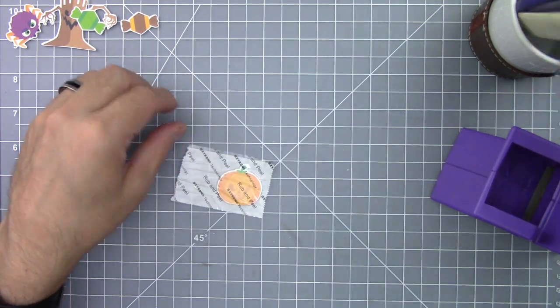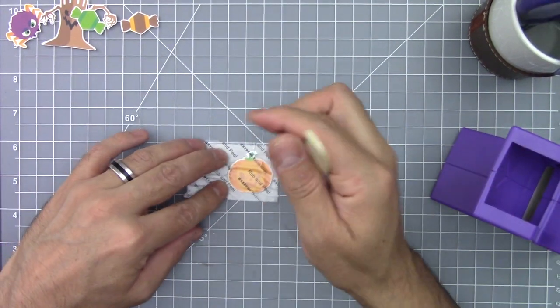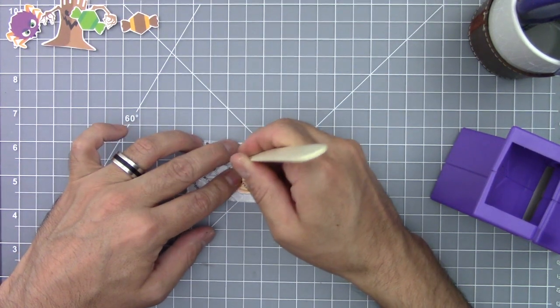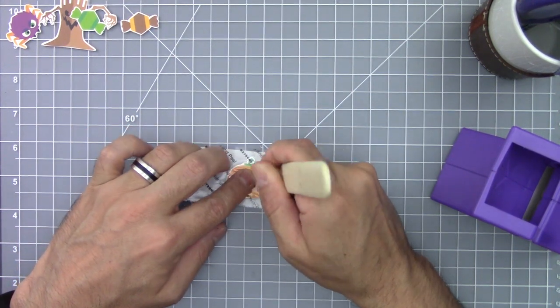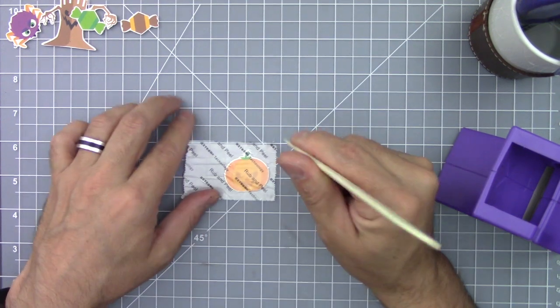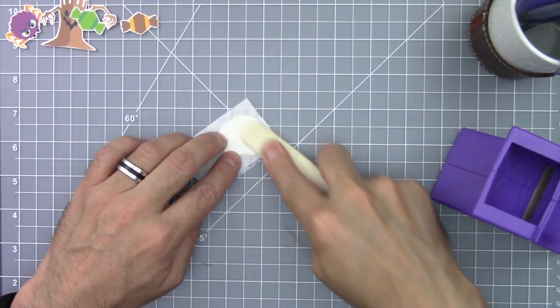And it's a good idea to use a bone folder or a pen to rub on the adhesive. I like to rub all the edges of the image or the cutout, and then I also rub on the back.